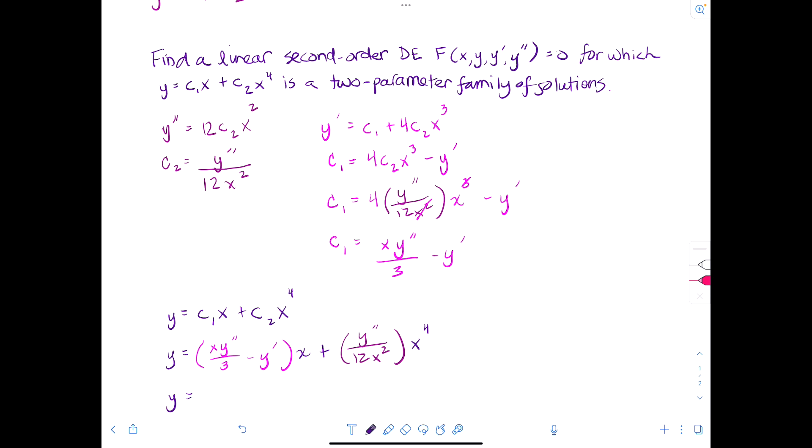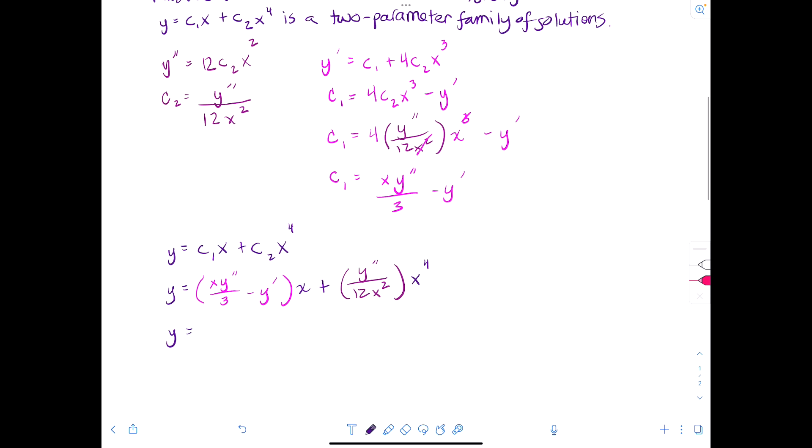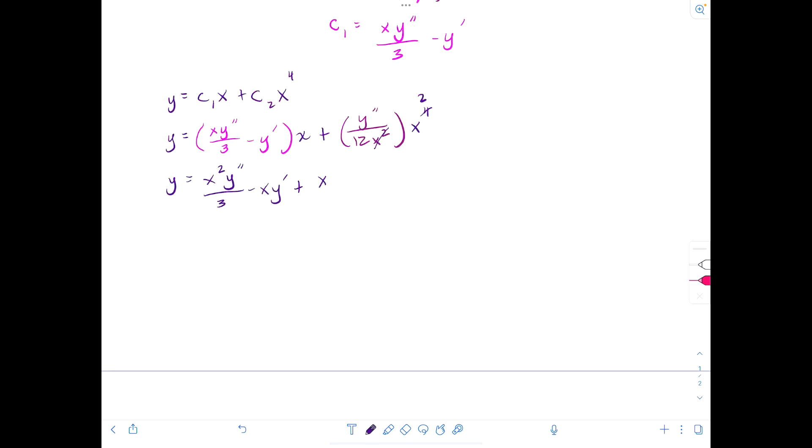And then y will be equal to x squared y double prime over 3 minus x y prime. This x squared divides out two of those. So we'll get plus x squared y double prime over 12.